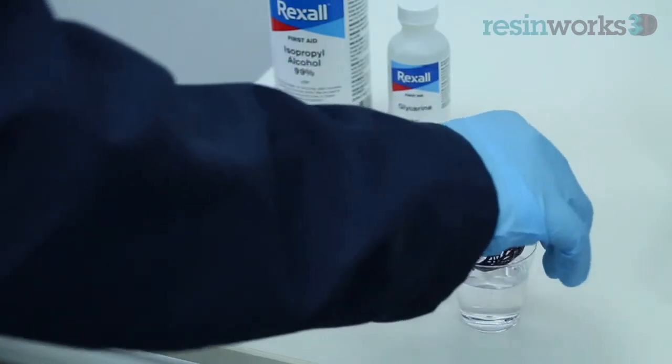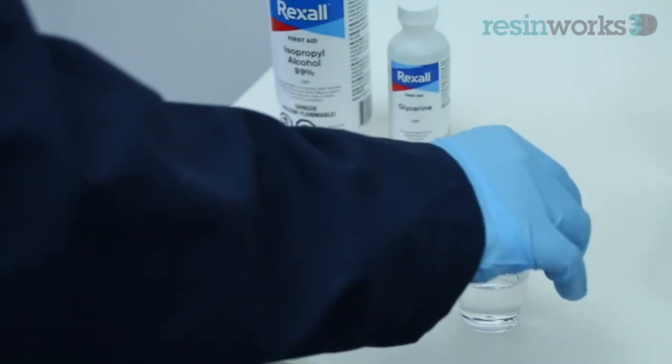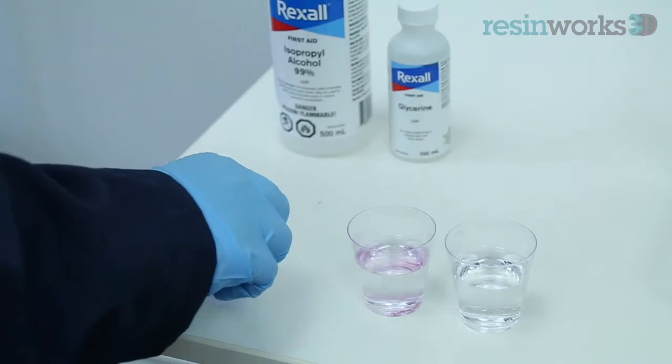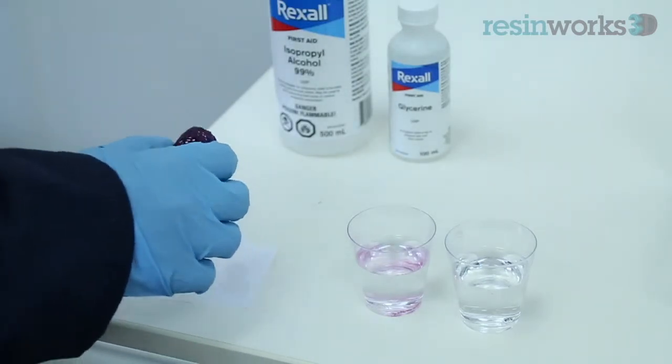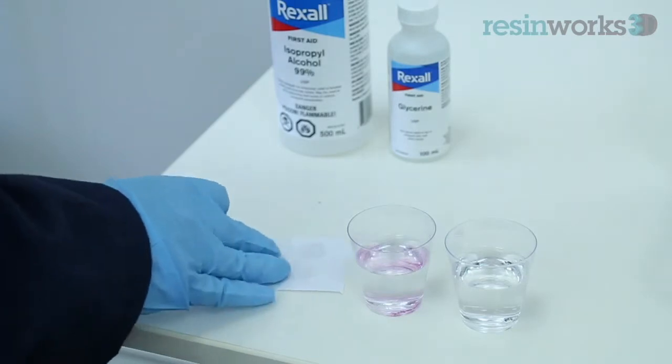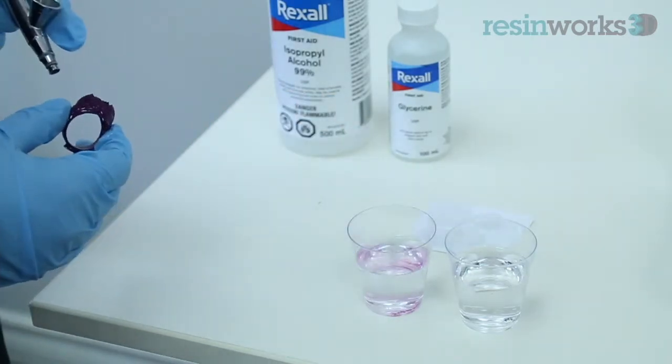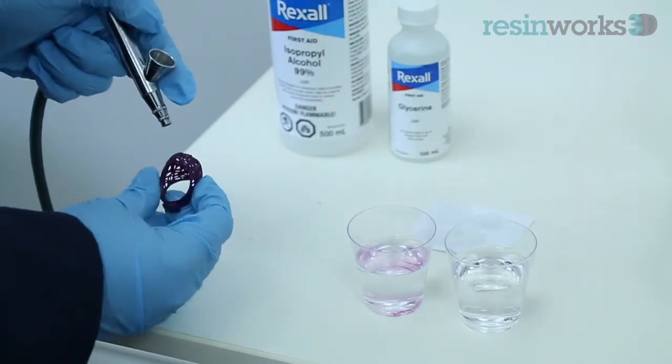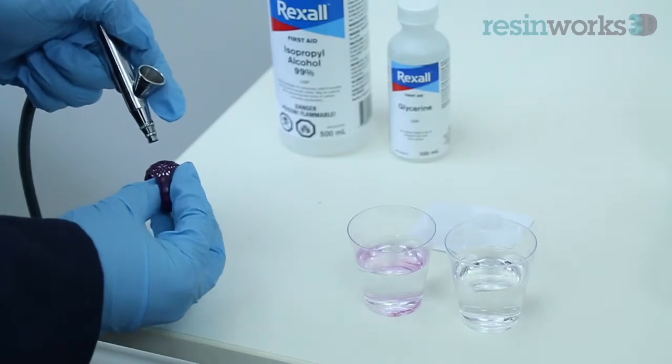At this point you can either let it dry or use an air compressor to speed up the process and help remove any additional particles. Once you dry the model, examine the model for any remaining residue. If you find any, repeat the previous steps of placing the model in the IPA. Use a fresh batch of IPA if necessary.